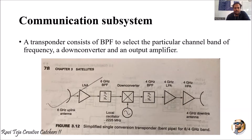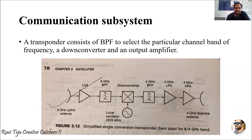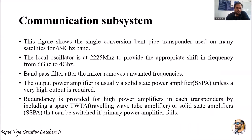The low power amplifiers as well as high power amplifiers are mainly used for the amplification of the signal. We are using a six gigahertz frequency for uplink and four gigahertz for downlink. In between these two, we have a local oscillator of 2225 megahertz, which helps in down converting the signal.